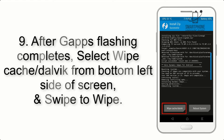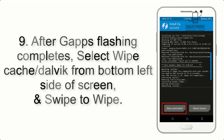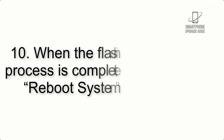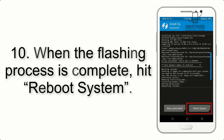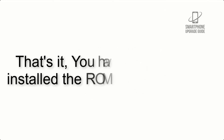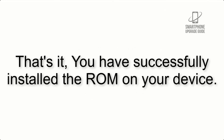Step 8: Flash the GApps zip package in the same manner. Step 9: After GApps flashing completes, select Wipe Cache and Dalvik from the bottom left side of the screen and swipe to wipe. Step 10: When the flashing process is complete, hit Reboot System. That's it — you have successfully installed the ROM on your device.